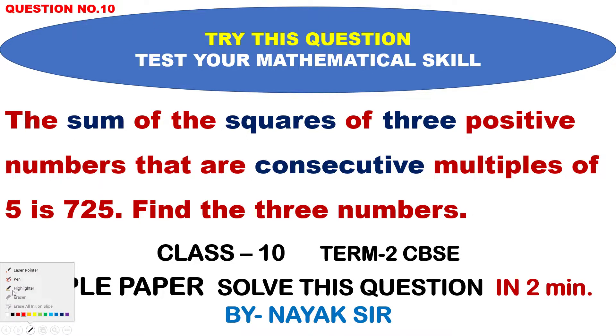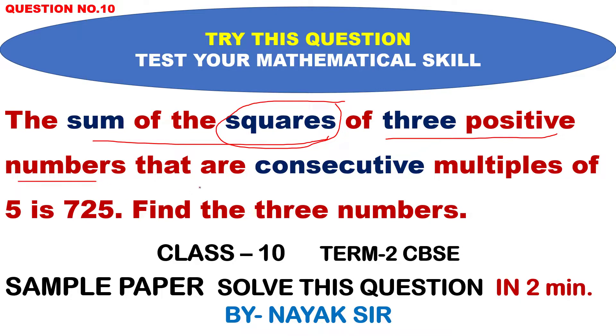The sum of the squares - remember - of three positive numbers that are consecutive multiples of 5. Remember this point, is 725. Find the three numbers. Let's start the question.